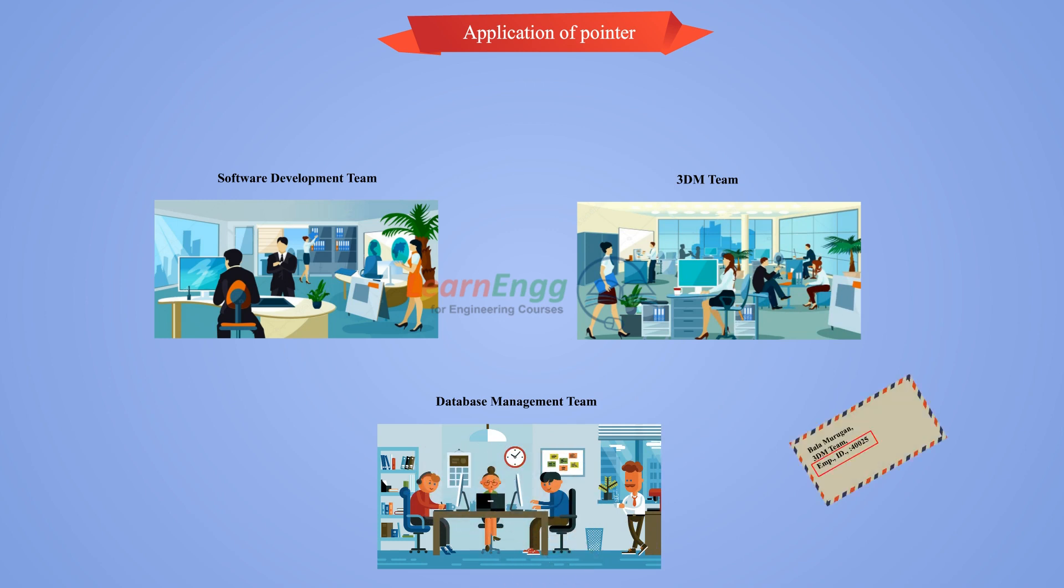Here employee ID 40025 represents a value and building represents a variable and department will represent address. Now, it will be easy for you to directly find the address of the person having employee ID 40025.